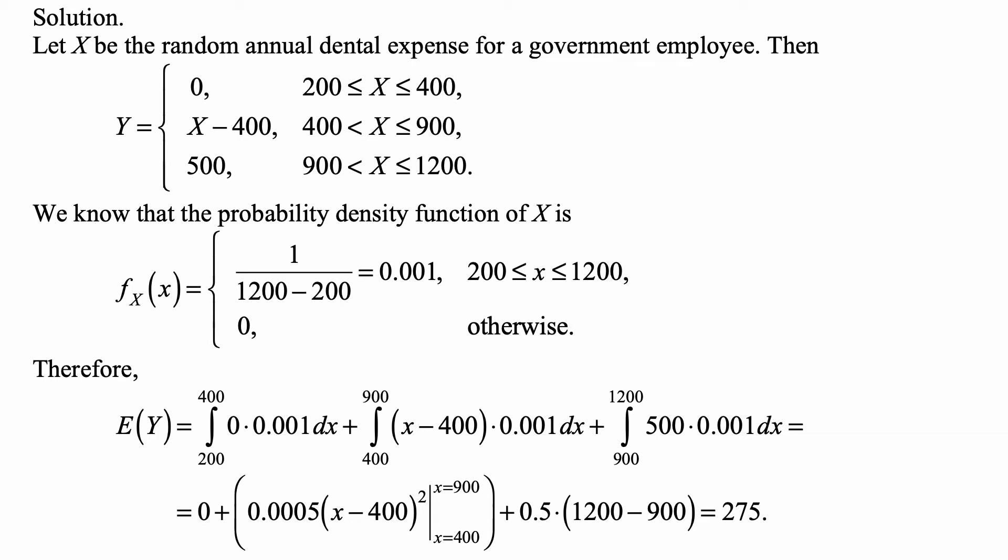The second one we can calculate to be one half of (X minus 400) squared times 0.001, which is 0.0005 times (X minus 400) squared, evaluated from X equals 400 to X equals 900.